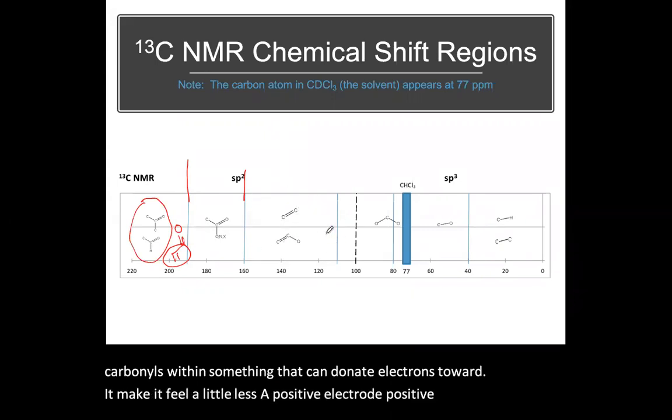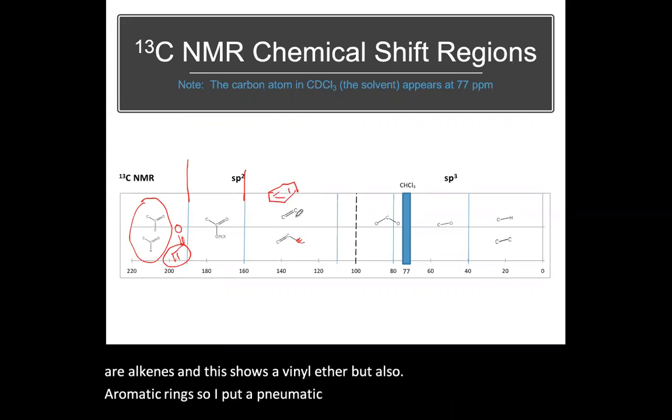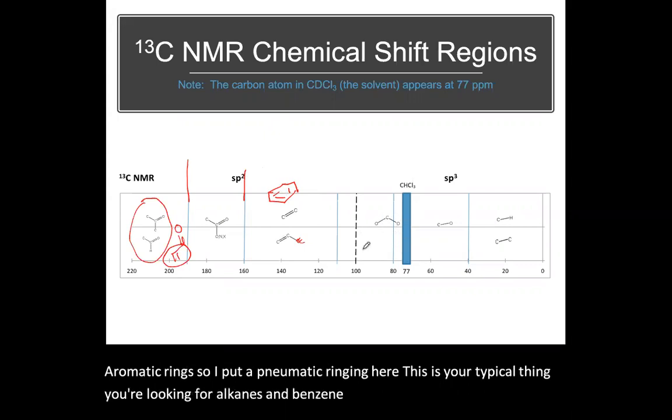110, 120 to 160 are alkenes. And this shows a vinyl ether, but also aromatic rings. So I put an aromatic ring in here. This is your typical thing you're looking for, alkenes and benzene rings. This is not common.